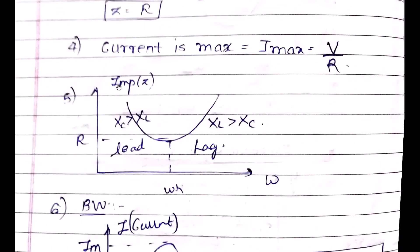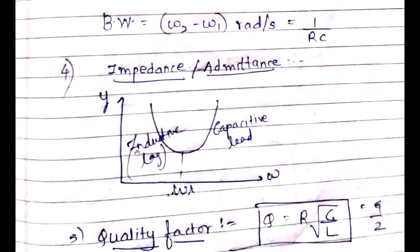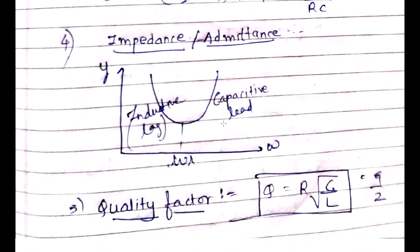Looking at the impedance graph for the parallel RLC circuit — compared to the series RLC circuit — below the resonant frequency the behavior is inductive, whereas above the resonant frequency it is capacitive. The quality factor for the parallel RLC circuit is given as R × √(C/L), which is also expressed as 1/(2ζ), where ζ is the damping ratio.